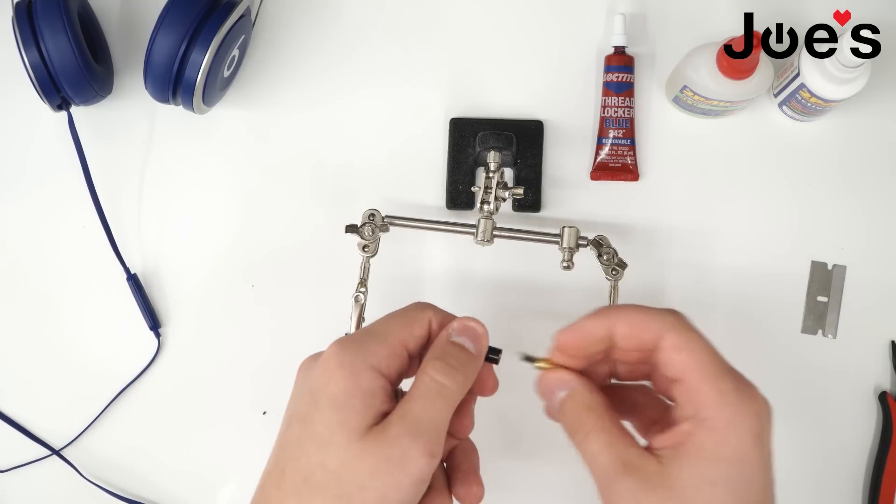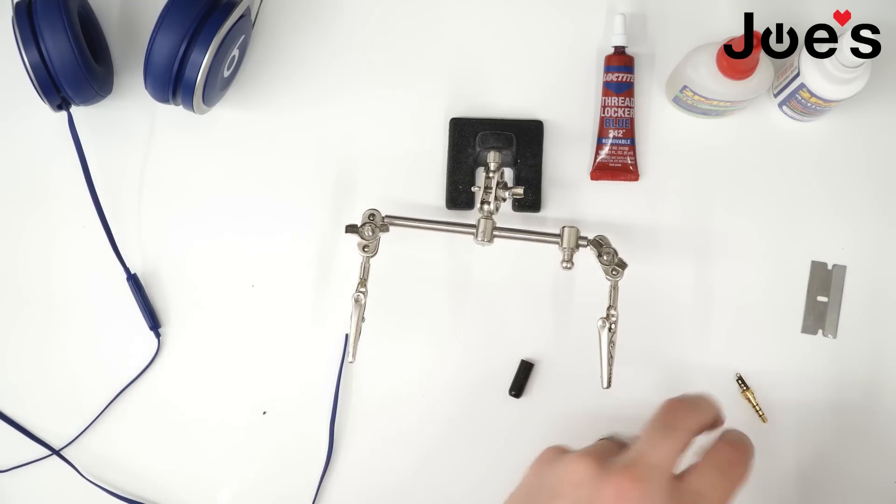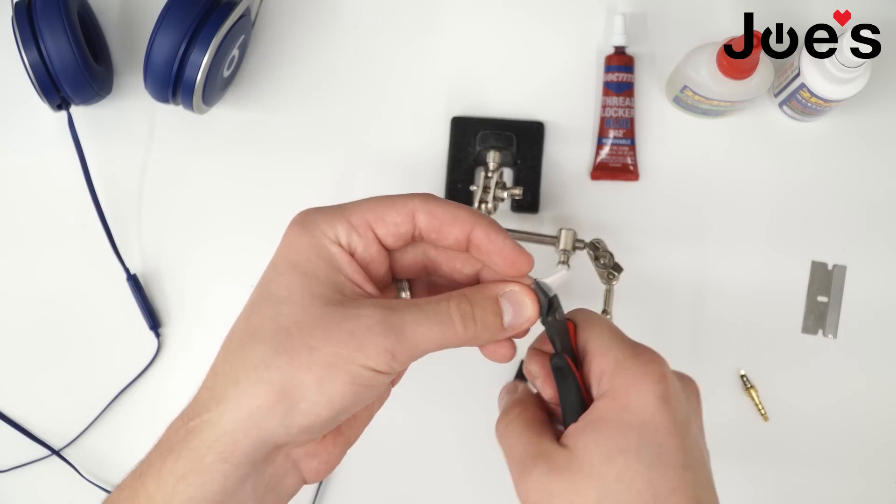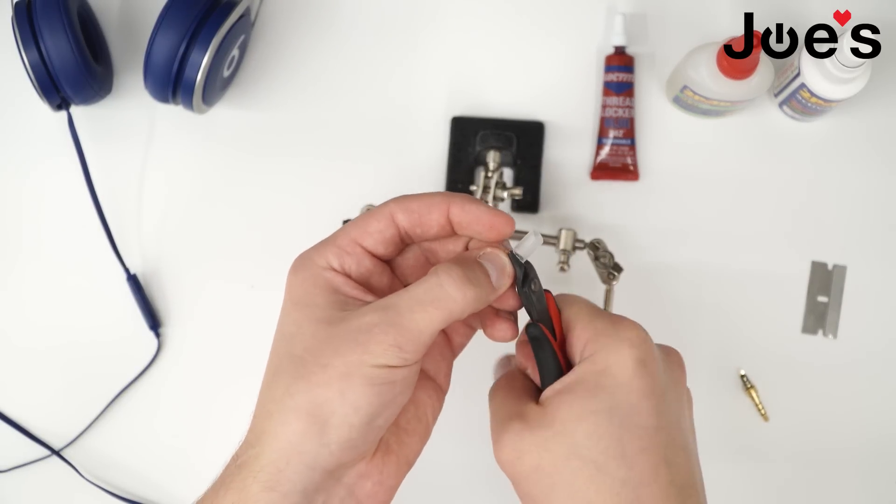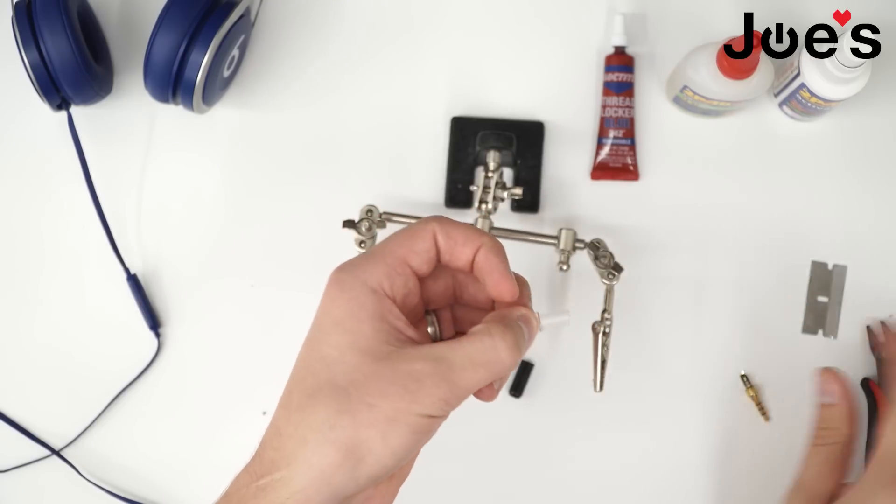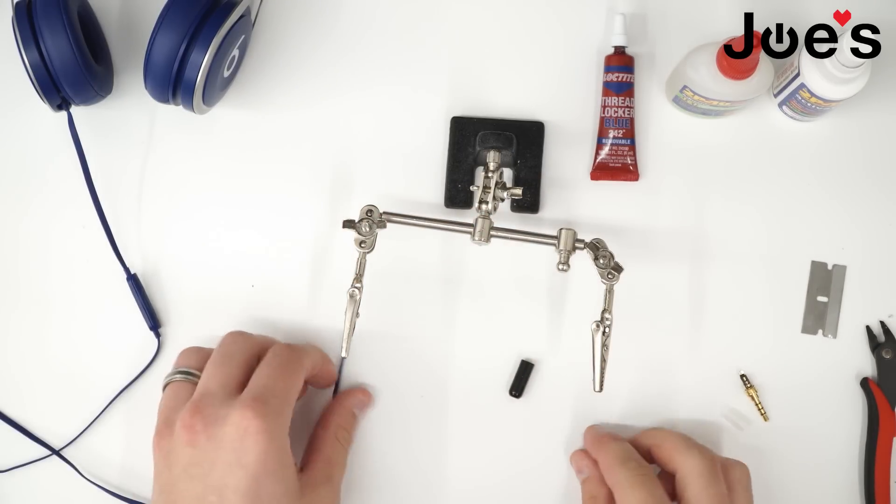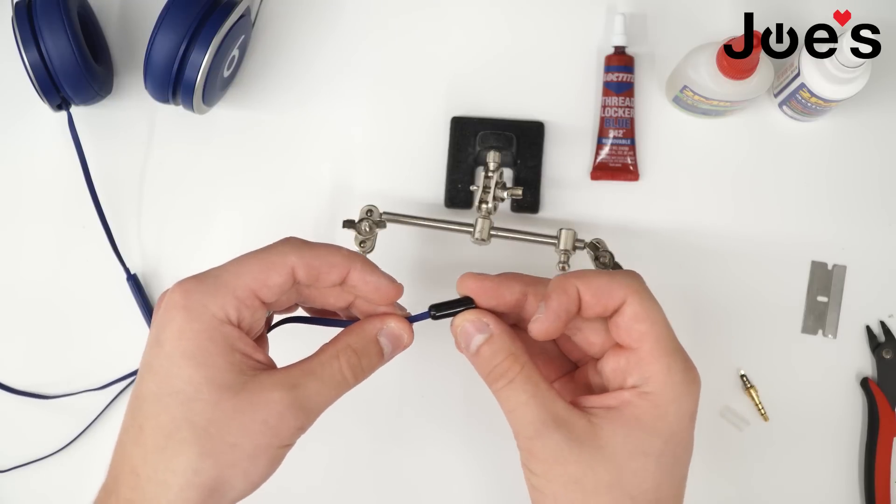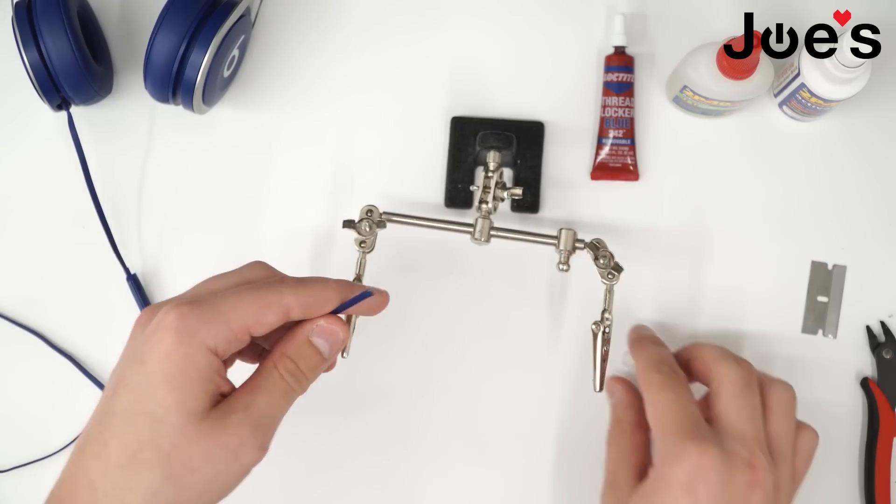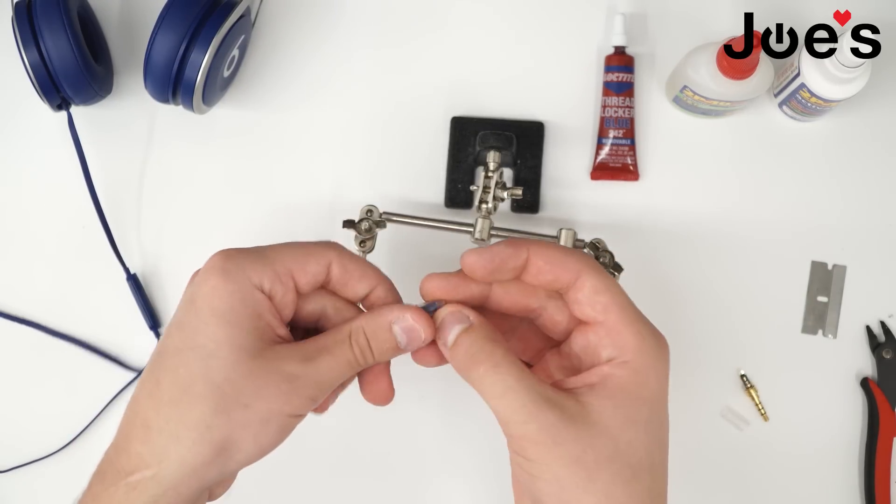Unscrew the replacement jack. Cut half of the shrink tube. Put on the end of the jack first, then slide the shrink tube onto the wire.